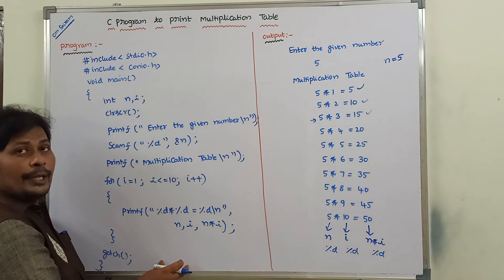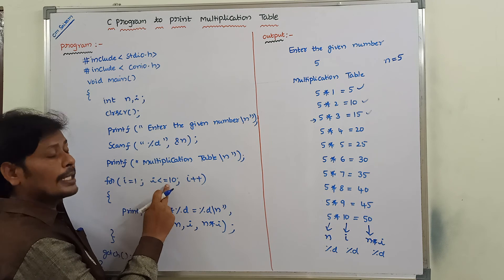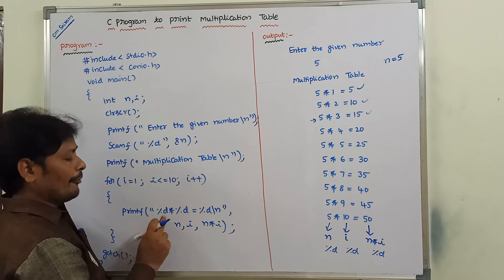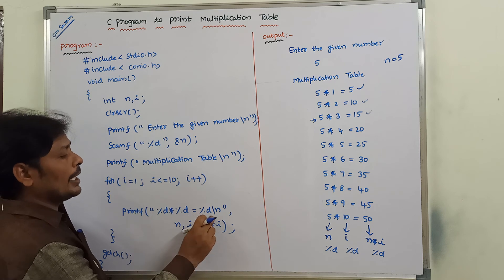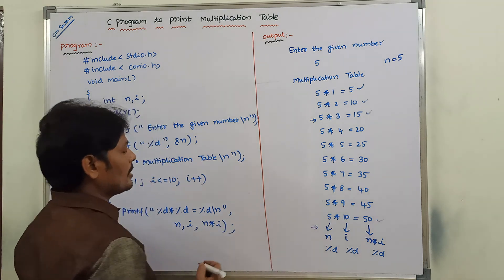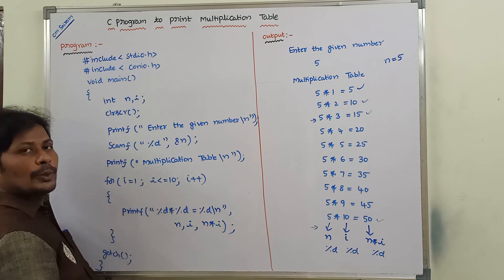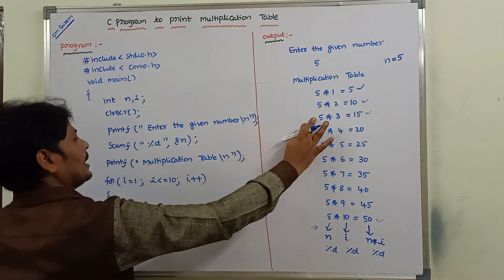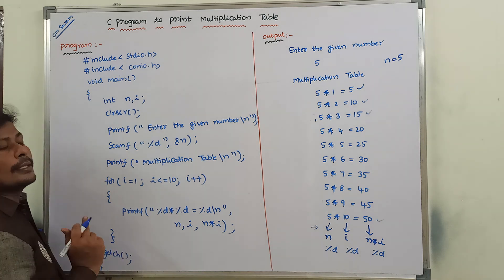This procedure continues until i value is equal to 10. When i equals 10, condition 10 less than or equal to 10 is true, control goes to the body. n value is 5, i value is 10, so 5 into 10 is equal to 50 — it is printed. After that, i is incremented to 11. Now 11 less than or equal to 10 — condition false. The control goes to the next statement after the for loop. There are no statements after the for loop, so the program is terminated.